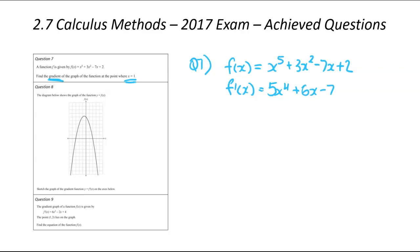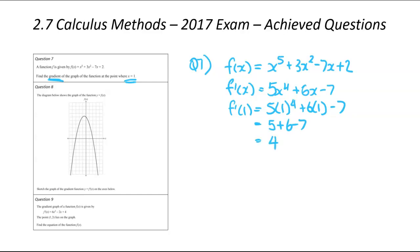We're now going to substitute because we've been told x = 1. So f'(1) = 5(1⁴) + 6(1) - 7. One to the power of 4 is 1, times 5 stays at 5, plus 6 minus 7. Five plus 6 is 11, minus 7 gives us 4. So when x = 1, the gradient of the original function is 4.